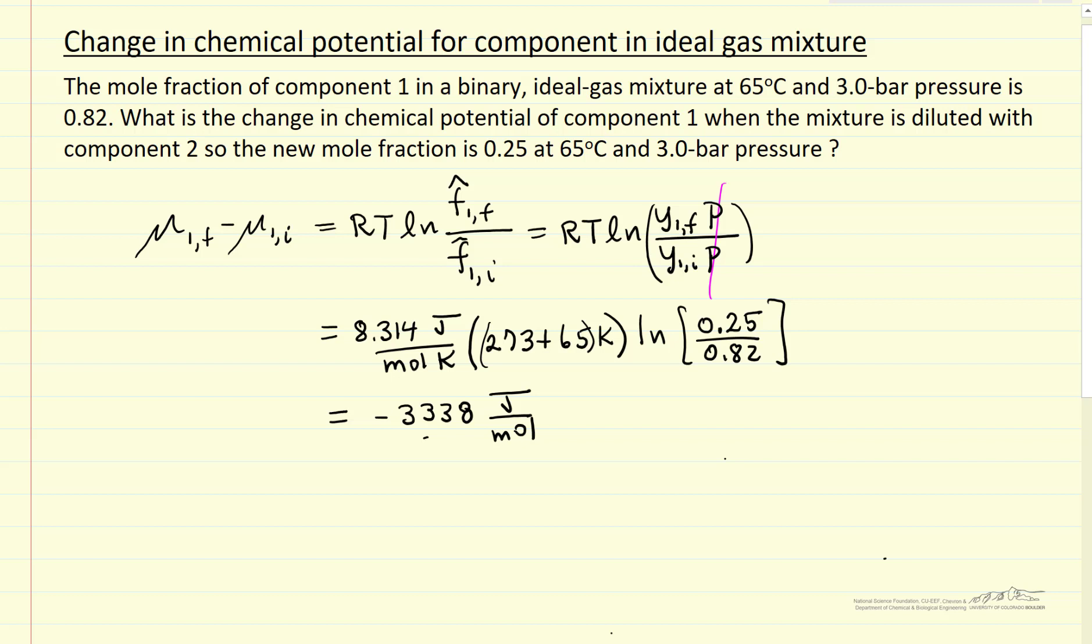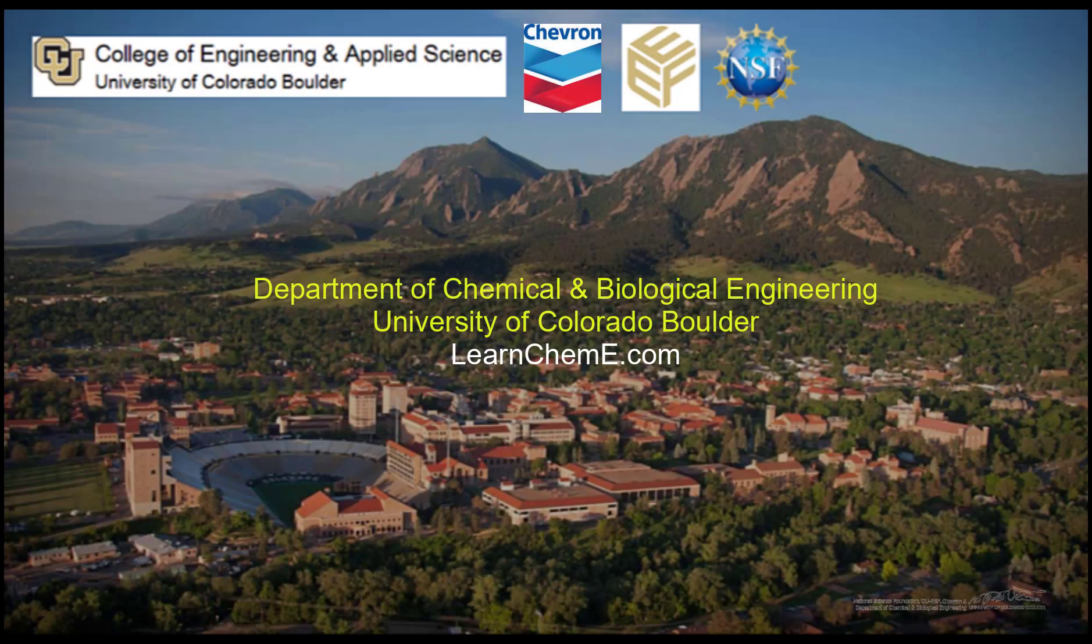So the chemical potential change, let's write it as negative 3.34 kilojoules per mole or maybe even negative 3.3 kilojoules per mole. So the chemical potential decreases as we decrease the concentration of component one as we would expect. So that's what we expect.